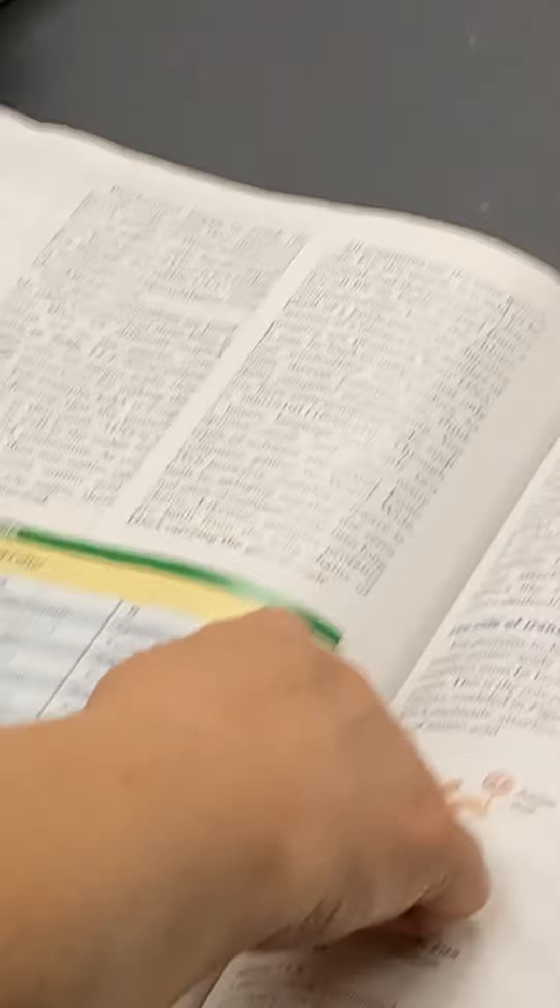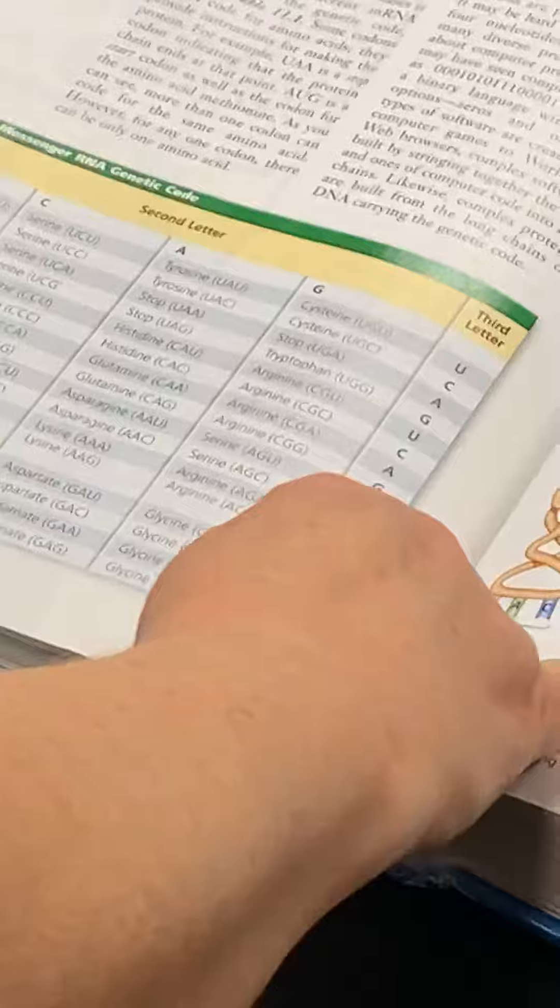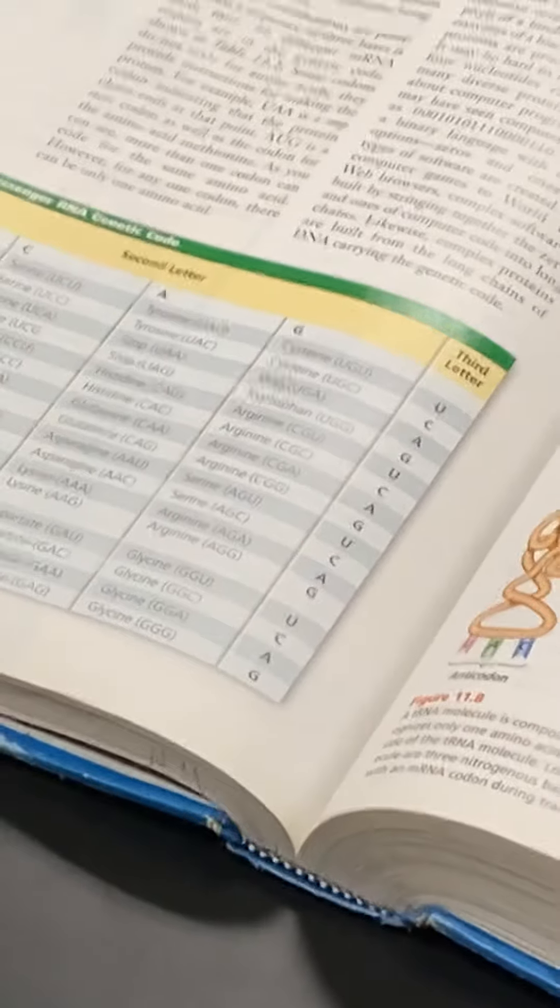The third letter is G, so you go to G. Now, where all three of them meet? At methionine. Methionine is also the start codon.